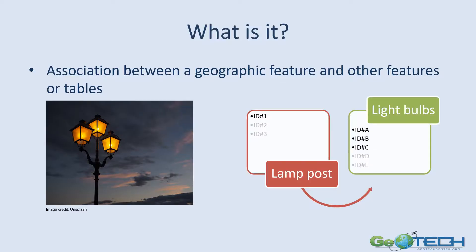So what is it? When we talk about attribute relationships, we're really looking at the association between some geographic feature and other features or tables. To give you an example, we may be looking at a lamppost and we want to look at how that lamppost is related to the different light bulbs on that lamppost. You may have one feature class with the location of all the lampposts and a different table or feature class that records all the light bulbs scattered throughout the city. Through a relationship class, you can show which light bulbs are associated with which lamppost.